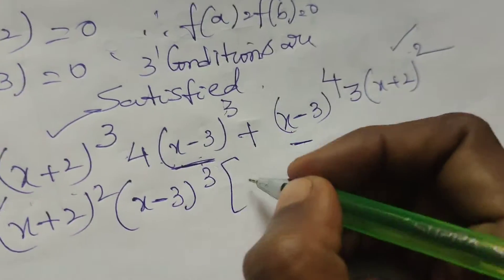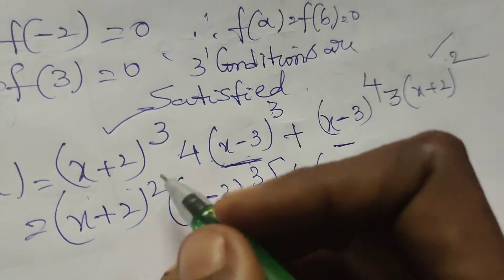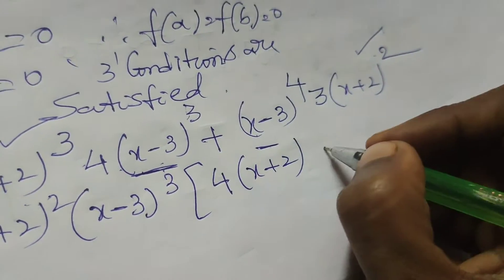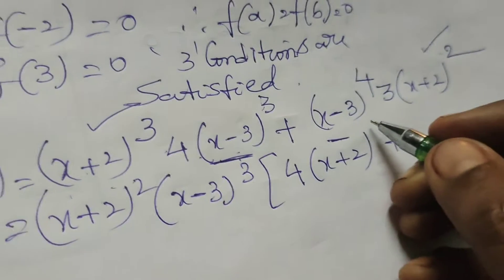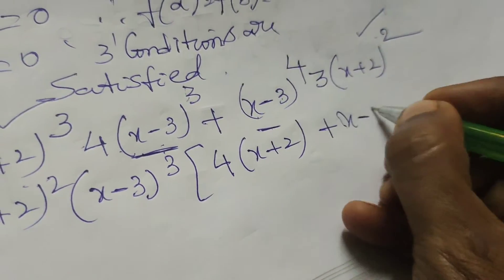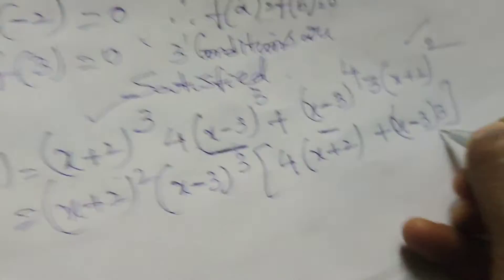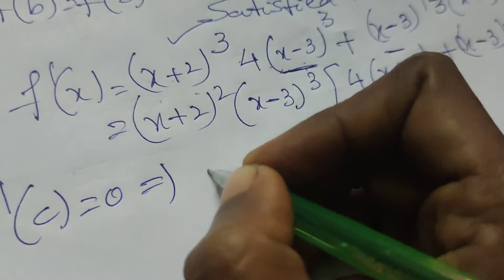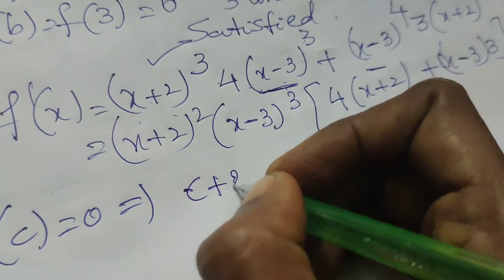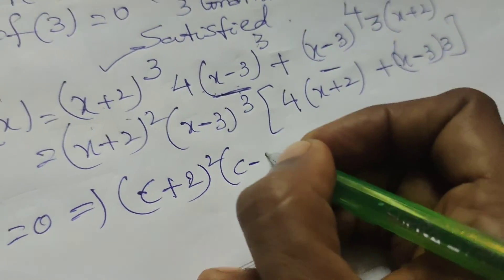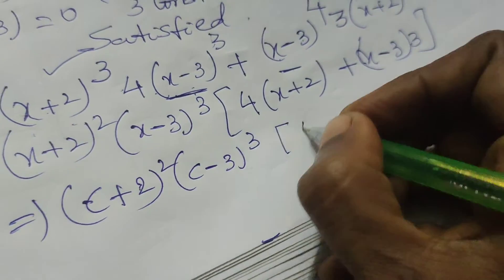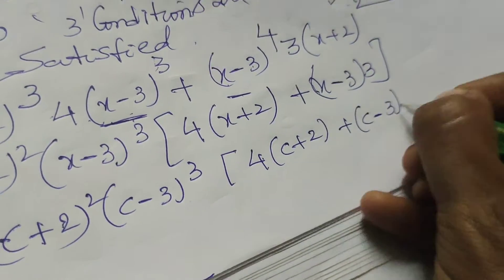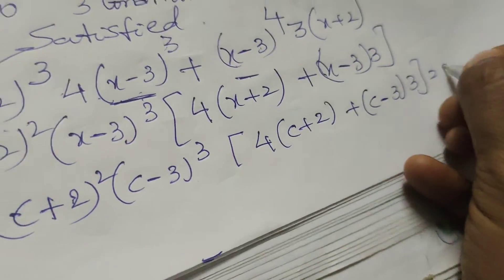f'(x) = (x+2)²·(x-3)³ · [4(x+2) + 3(x-3)]. Setting f'(c) = 0 and substituting x = c: (c+2)²·(c-3)³·[4(c+2) + 3(c-3)] = 0.